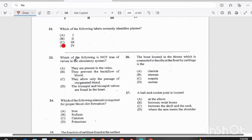Question 23. Which of the following is not true of valves in the circulatory system? A, they are present in veins, B, they prevent the backflow of blood, C, they allow only the passage of oxygenated blood, or D, the tricuspid and bicuspid valves are found in the heart? Answer there is C. Veins allow deoxygenated blood through their structure.